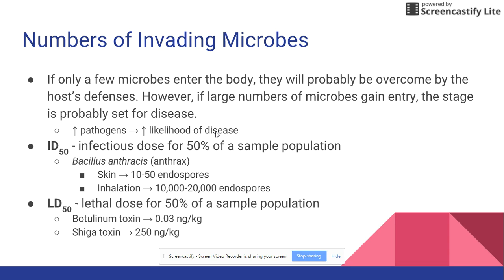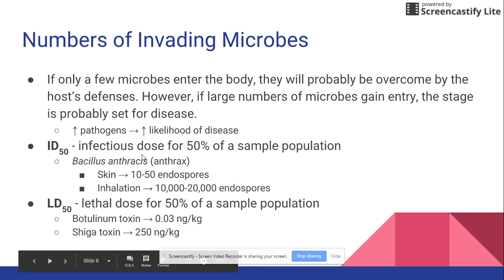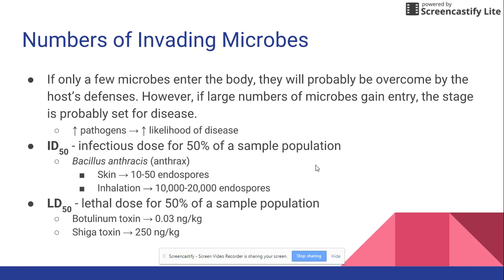There are two measures to look at: ID50 and LD50. ID stands for infectious dose, and the 50 means 50 percent of the sample population. For example, with a classroom of 12 people, the infectious dose means how many microbes it takes for 50 percent of the population — six people — to get that disease.